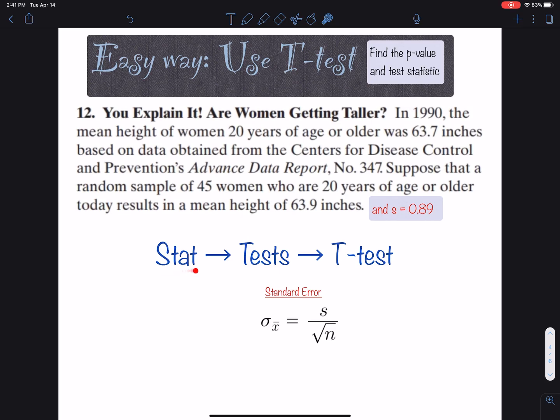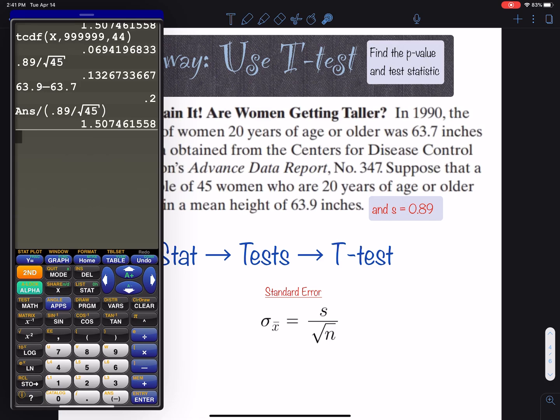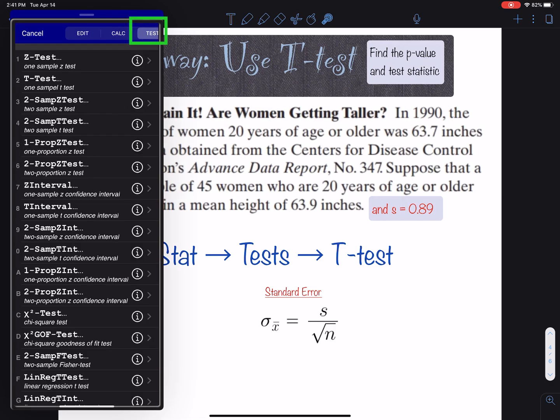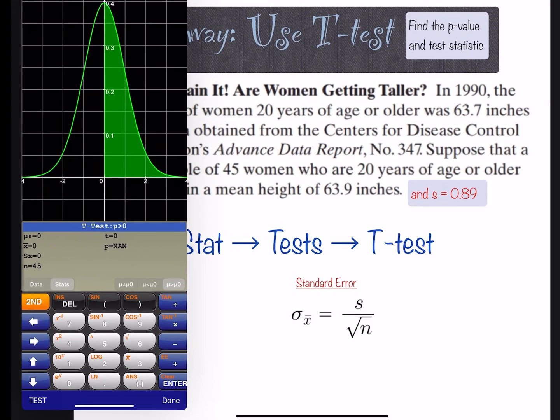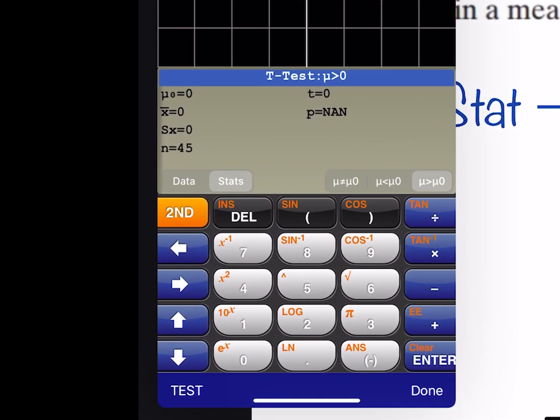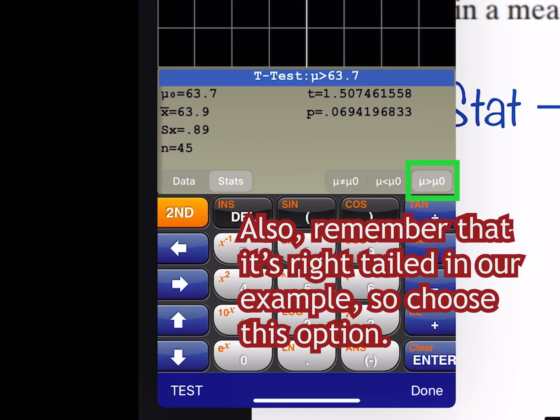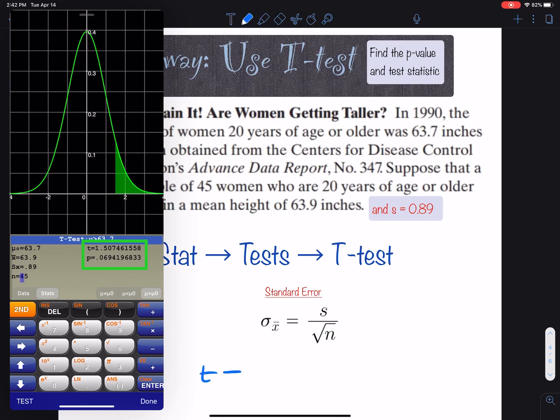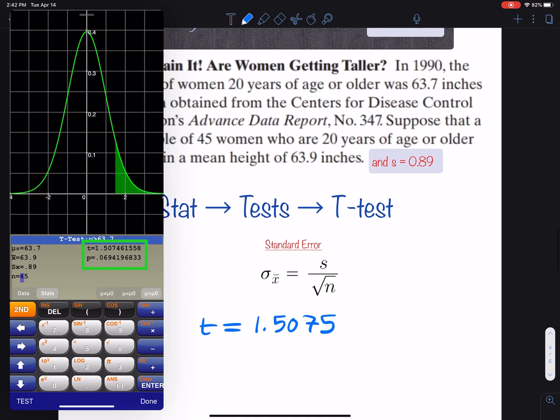Go to STAT, TESTS, T-Test. It will ask for these values: μ₀ (the hypothesized mean) is 63.7, the sample mean is 63.9, sample standard deviation is 0.89, and sample size is 45. It gives us a test statistic t = 1.5075 and a p-value of 0.0694.